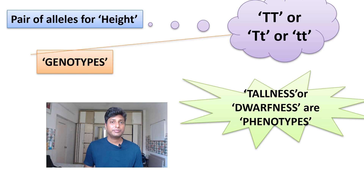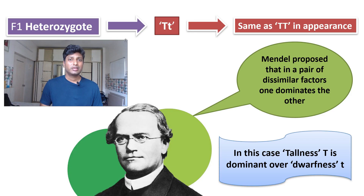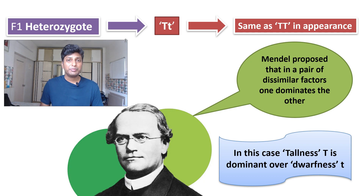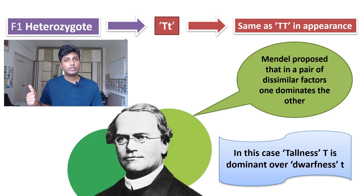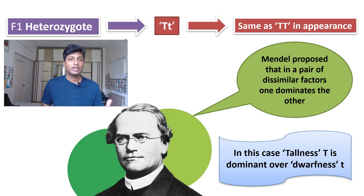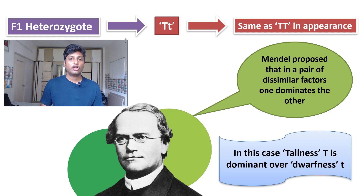Phenotypes are the external features of a particular organism. What Mendel concluded was that in the F1 generation, plants can be either TT or Tt. Plants with alleles TT or Tt are the same in appearance — both are tall. Even TT and Tt will both be tall plants, meaning whenever a plant has a pair of dissimilar alleles, one factor will dominate the other.